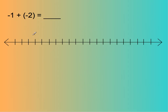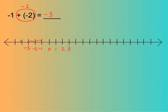We have one more problem: negative 1 minus negative 2. That means start at negative 1 and go to the right — no, actually, it means go to the left for 2. If you're going to the left, it means it's a negative. So start at negative 1 and go to the left 2: 1, 2. The answer is negative 3. I hope you notice a pattern — if you are going in the same direction both times, you're just adding up the lengths: a length of 1 and a length of 2 gives a length of 3, going 3 spaces to the left, so it's negative 3.